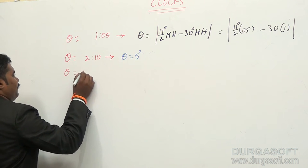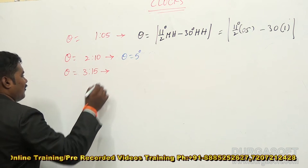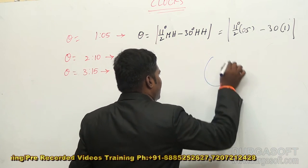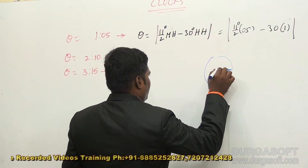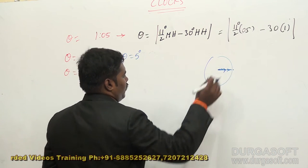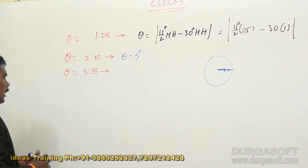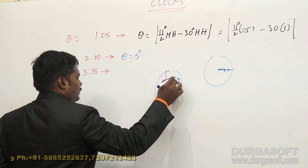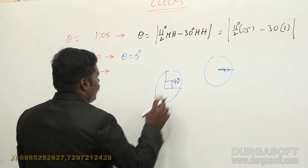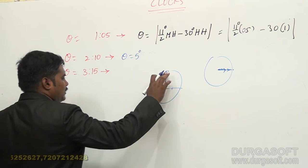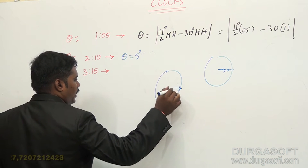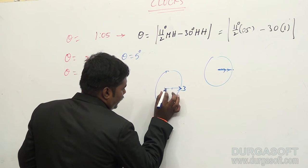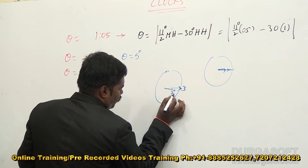When the time is 3:15, the hour hand is at 3 and the minute hand is also at 3. These two hands are at this position. What is the angle initially? 0 degrees. At 3 o'clock, this is the angle 90 degrees — you should remember that. To cover this distance, in 15 minutes, the hour hand covers 7.5 degrees. So this is the angle 7.5 degrees here.